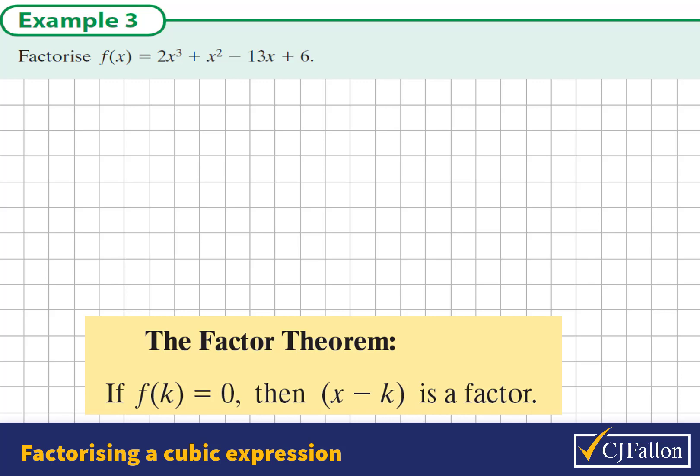We're going to use trial and error, substitute in values instead of x, and see which values will give us an output of zero. When we do this we'll find what the roots or solutions are, and when we know solutions we know factors. Numbers to try would be factors of this constant term, factors of the plus 6.